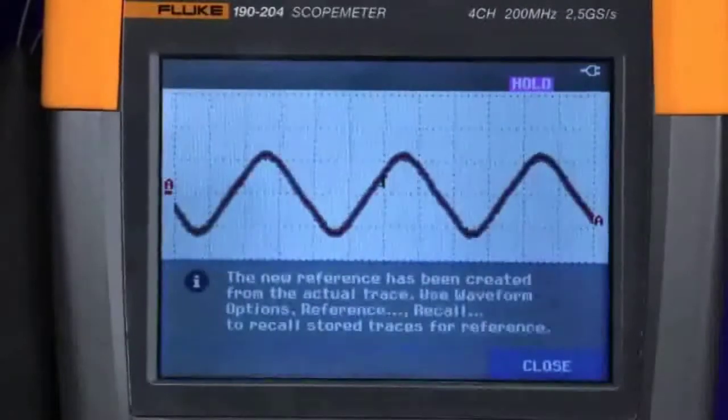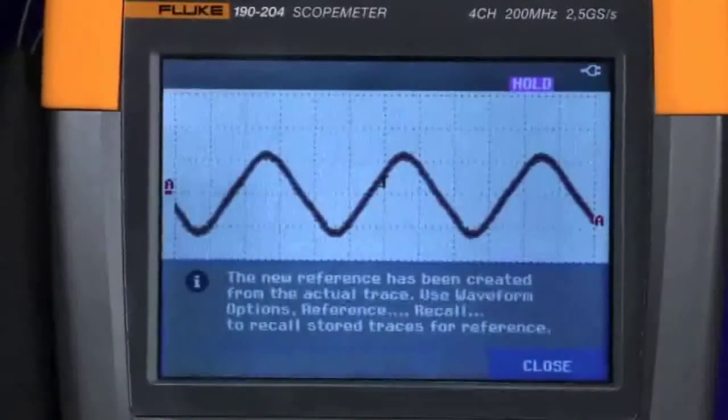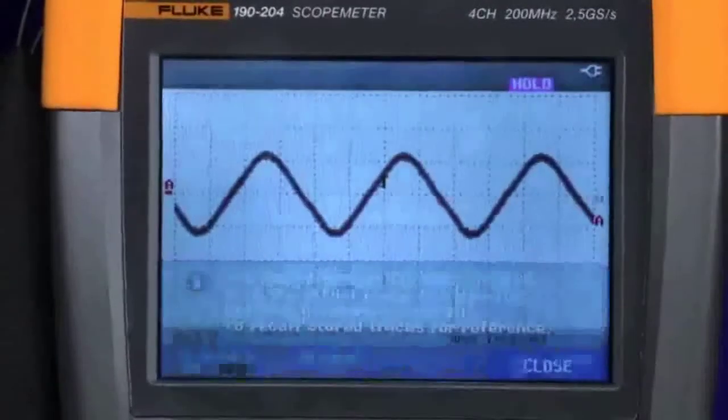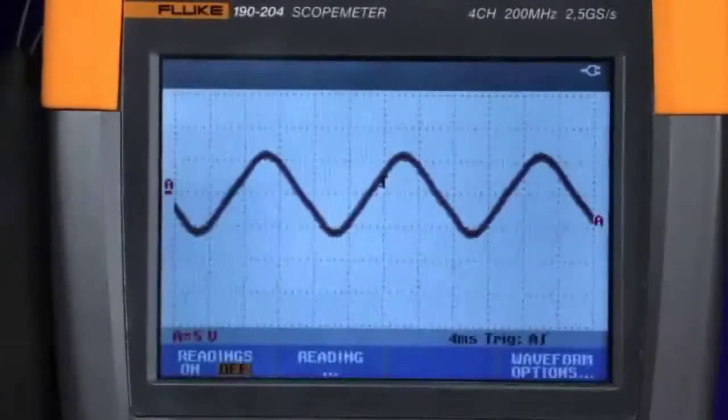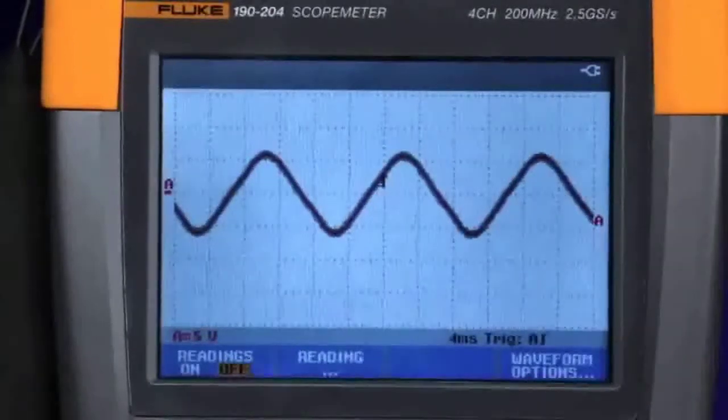The next step in setting up the pass-fail test mode is to set up the oscilloscope to decide what it should capture, whether to store a waveform within the envelope in the pass mode or store the waveform when it exceeds that envelope.